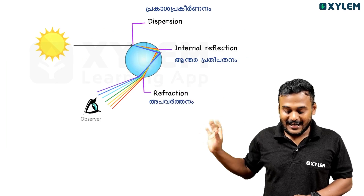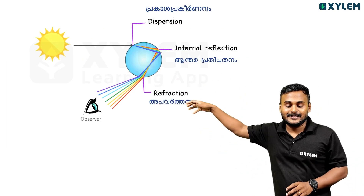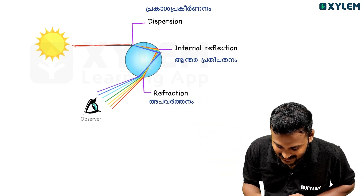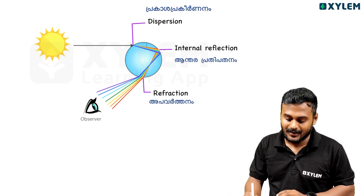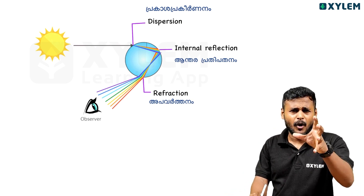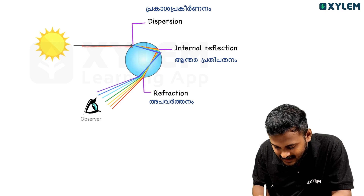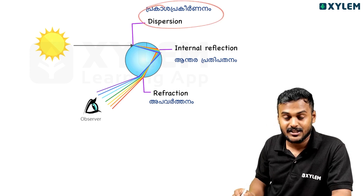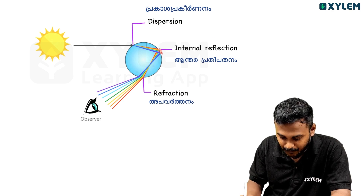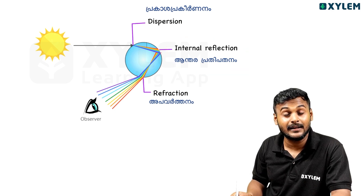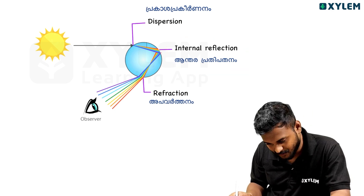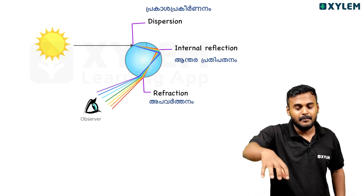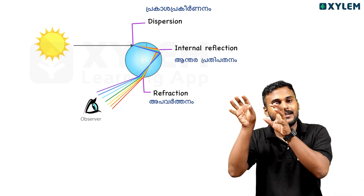We're coming to rainbow. Water droplets in sunlight — white light splits into composite colors. When white light splits, this is dispersion. There is also internal reflection involved. This involves refraction, dispersion, and internal reflection — three factors combined in one water droplet.